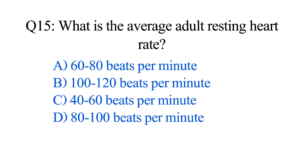Question number fifteen. What is the average adult resting heart rate? Option A: 60 to 80 beats per minute. B: 100 to 120 beats per minute. C: 40 to 60 beats per minute. D: 80 to 100 beats per minute. The correct option is Option A: 60 to 80 beats per minute.